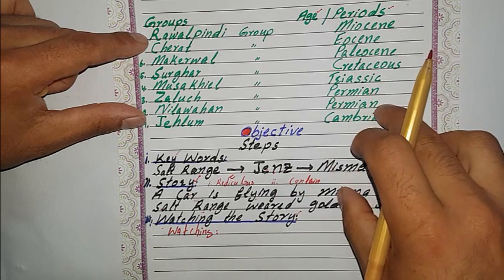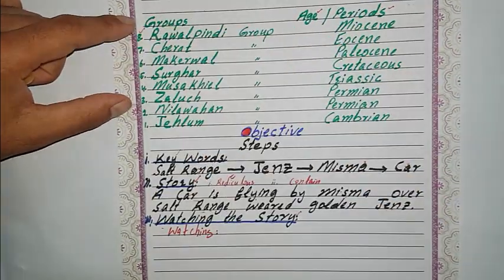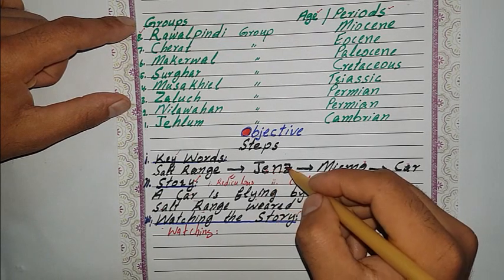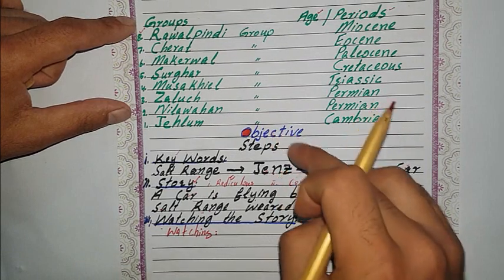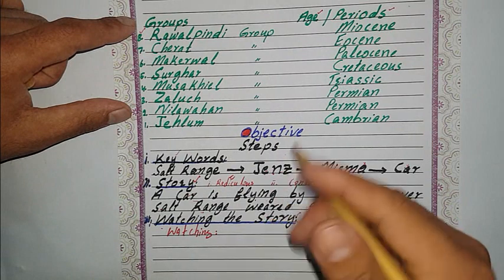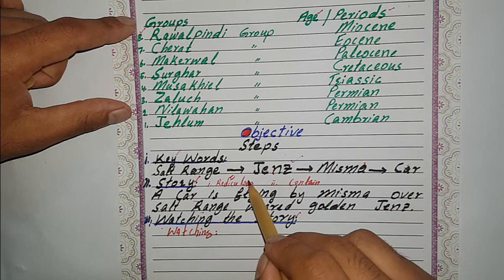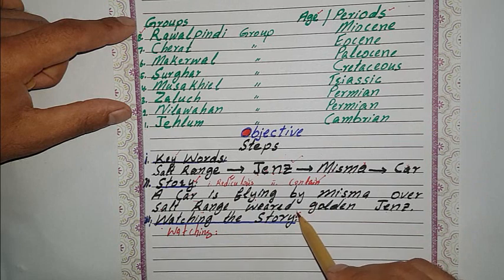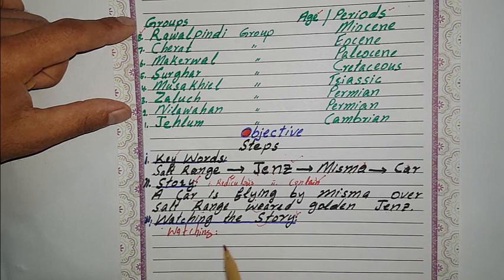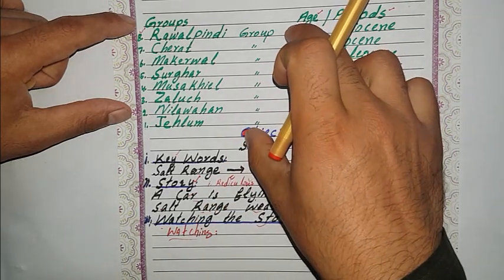Let's summarize. This video is about the stratigraphic group names of the Salt Range. There are eight stratigraphic groups. The key for remembering them is only helpful for geology students. The second step is a story about this key — it must be ridiculous and contain the keywords. The third step is to close your eyes and watch the story like a movie, and you will never forget the stratigraphic group names of the Salt Range.